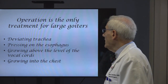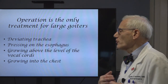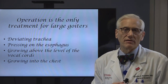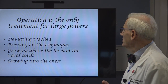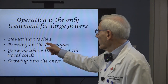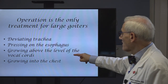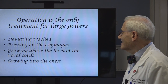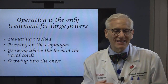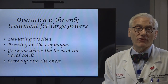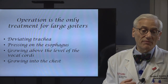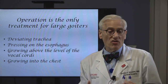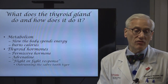In summary, operation is the only treatment for a large goiter. There isn't a medication that's going to make it shrink up. If it's pushing the trachea over, pressing on the esophagus, growing above the level of the vocal cords, or growing down into the chest, those are indications to operate — not for cancer, but because it's pressing on the structures in the neck or the upper chest.